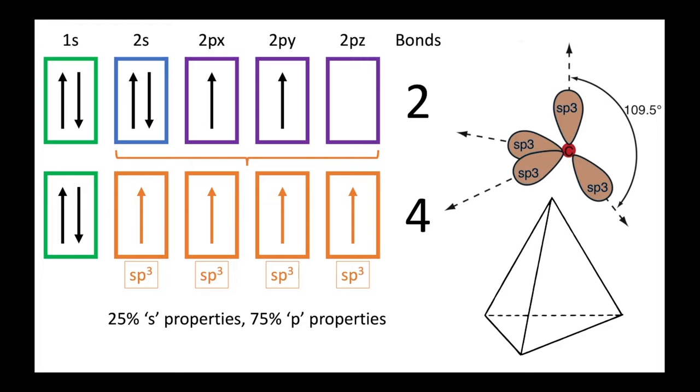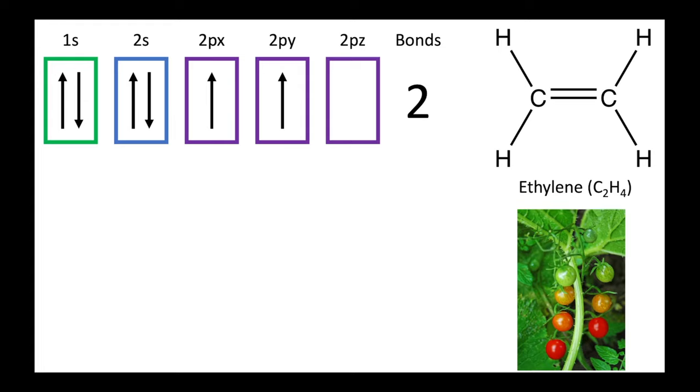So we've had a look at how a carbon atom can form four bonds, but what about when it only forms three bonds? In the example given here of ethylene, which is a gas used to induce the ripening of fruit, each carbon forms only three bonds, two with hydrogen and one with the other carbon. Therefore, a different type of hybridisation needs to occur in this scenario.